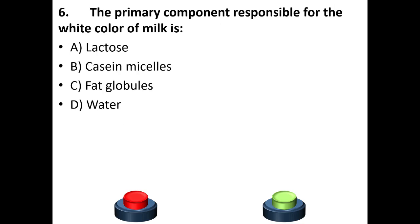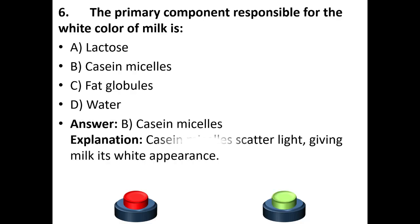Sixth question: The primary component responsible for the white color of milk is — A. Lactose, B. Casein micelles, C. Fat globules, D. Water. The answer is B — Casein micelles. Casein micelles scatter light, giving milk its white appearance.